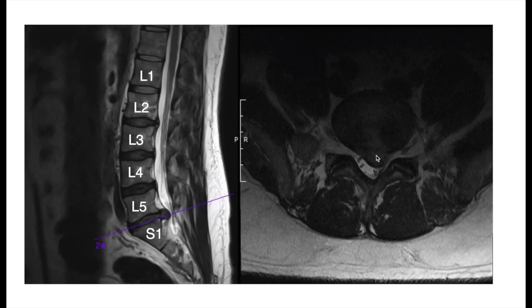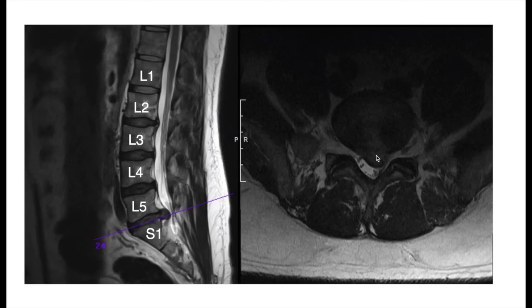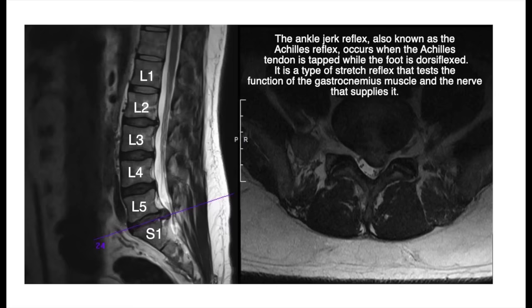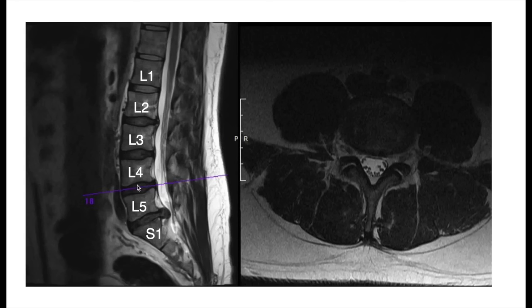With the S1 nerve root compressed, I would expect this patient to have pain, discomfort, maybe some numbness and tingling on the lateral side of the foot, possibly on the plantar surface of the foot — because if you look at the dermatome map of the body, this is where the S1 nerve root provides sensation. If we check their reflexes, their Achilles reflex may be abnormal or hyporeflexic, meaning they have a decreased reflex in their Achilles.